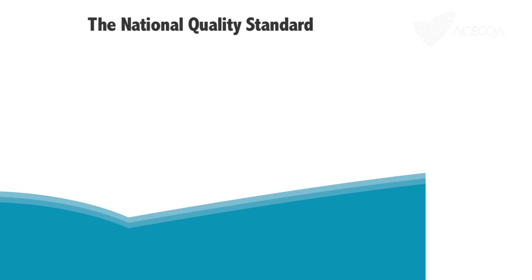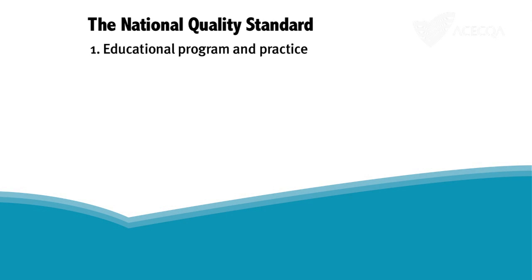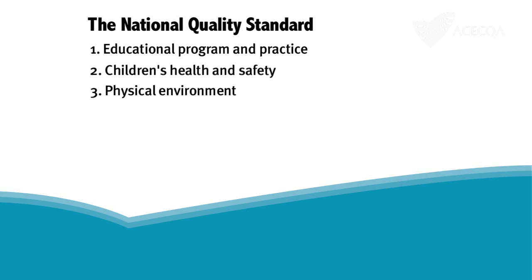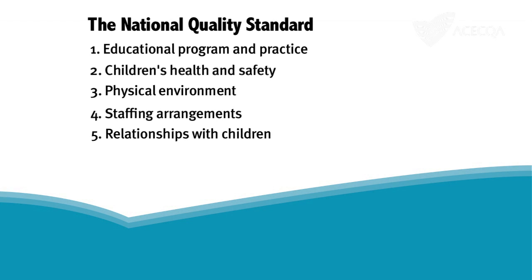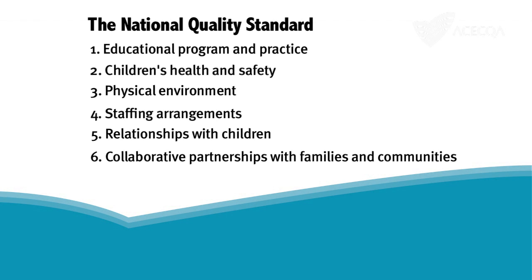The National Quality Standard is made up of seven quality areas: Educational Program and Practice, Children's Health and Safety, Physical Environment, Staffing Arrangements, Relationships with Children, Collaborative Partnerships with Families and Communities, and finally Leadership and Service Management.